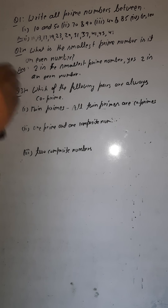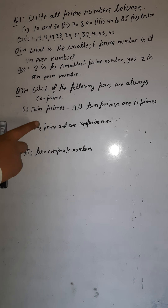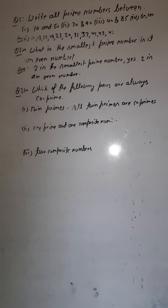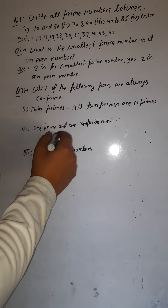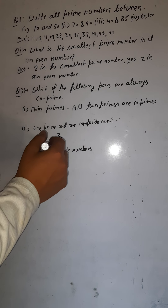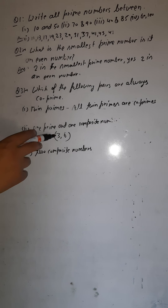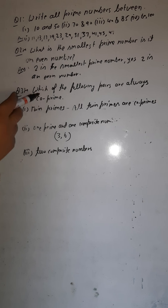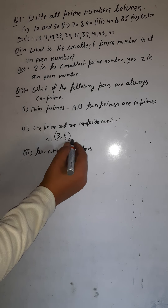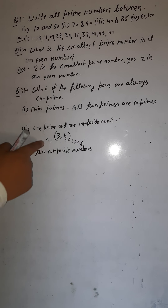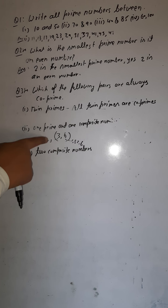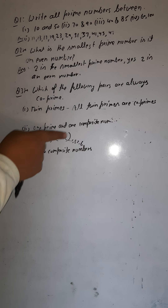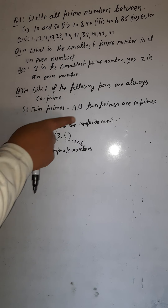Second case: one prime number and one composite number — are they always co-prime? Let's take three (prime) and six (composite). Factors of three are 1 and 3; factors of six are 1, 2, 3, and 6. Common factors are one and three. Since they have a common factor other than one, three and six are not co-prime.